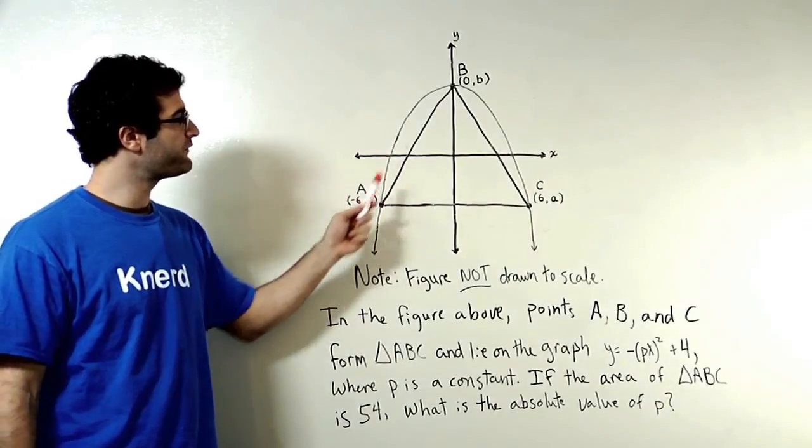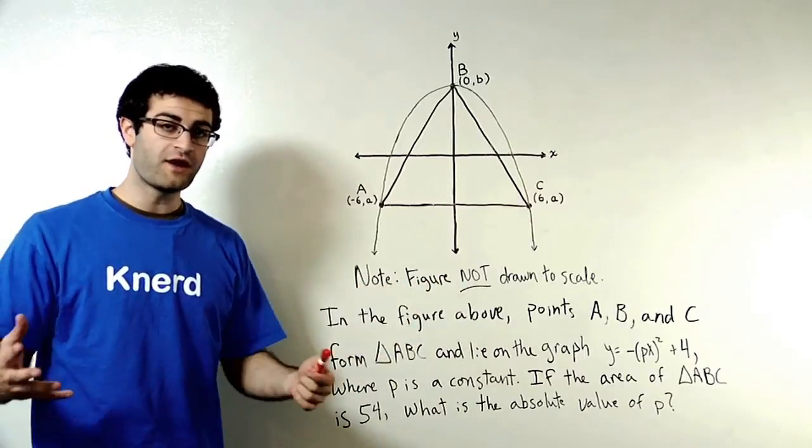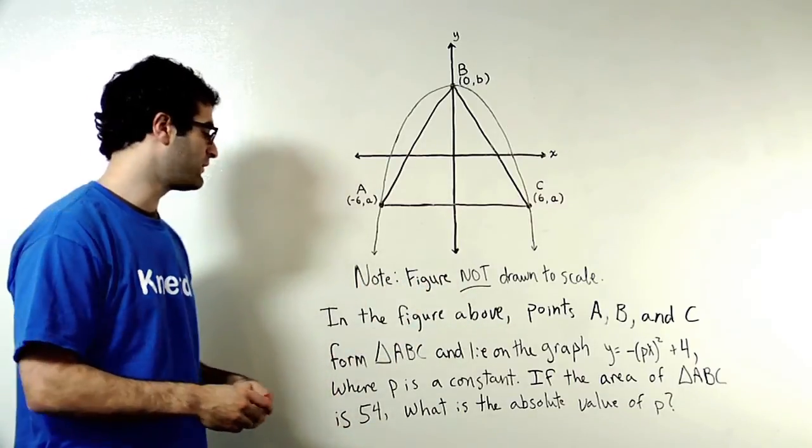We've got a diagram here with variables A and B. We've also got the fact that the figure is not drawn to scale. Let's just read through and see what we can figure out as we go along.